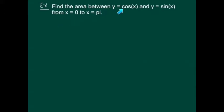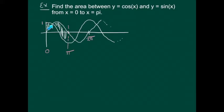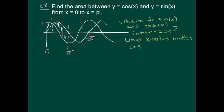Next we're going to find the area between the sine and cosine curves. As you can see, looking between the two curves gives a lot of area, which is why it's important that the x values are specified — otherwise we'd have infinite area from all the repeating segments. We'll go just from 0 to pi. There are two pieces: a first region and a second region, and we need to identify what x value separates them — where cosine of x equals sine of x.